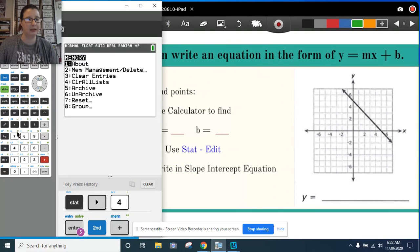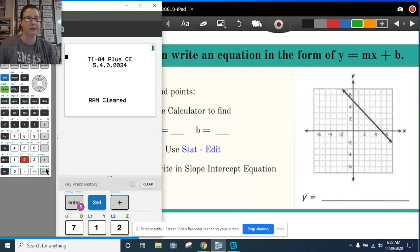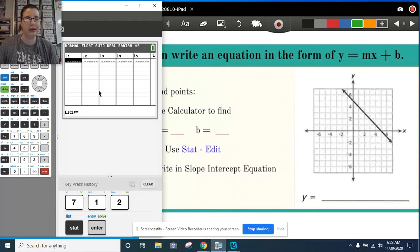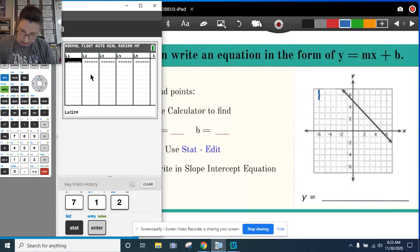Second plus 7, 1, 2. So I know what information I need to put in my L1 and L2. I've got to find some points that I want to make sure that whatever points I enter, they're on an intersection. So I'm going to look at this line and see where it intersects.